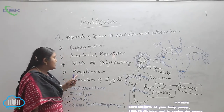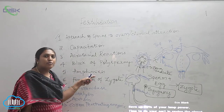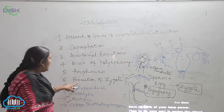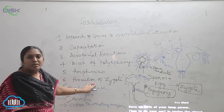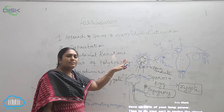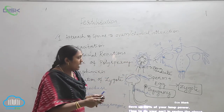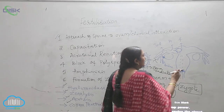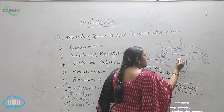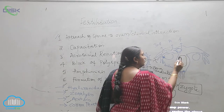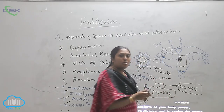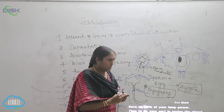The next step is amphimixes, which means the fusion of the gametes. The fusion of male and female gametes is called amphimixes. The last step is the formation of the zygote — after amphimixes, the zygote is formed and will be implanted in the uterus.